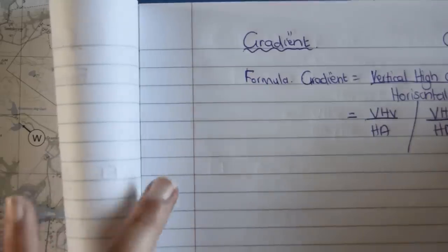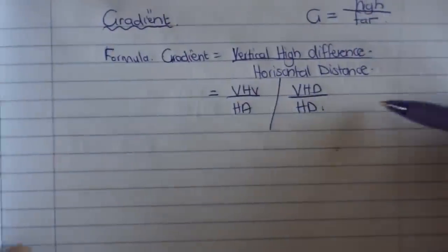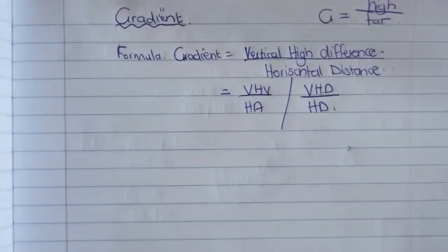If you use the Afrikaans abbreviations, you would have said VHV over HA, but you can also use the English one vertical height difference divided by the horizontal difference. You see, it's just the abbreviation of the full thing. They want you to write the full thing out. Please write the full thing out just to get it.